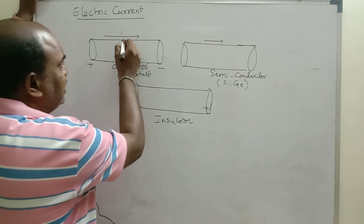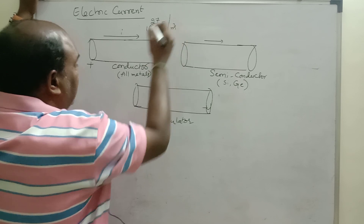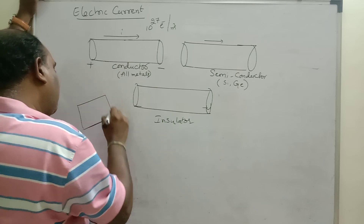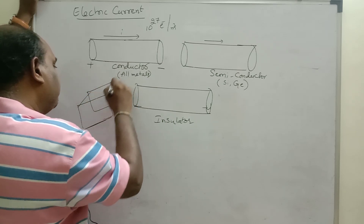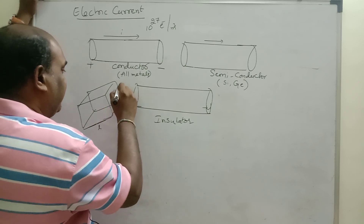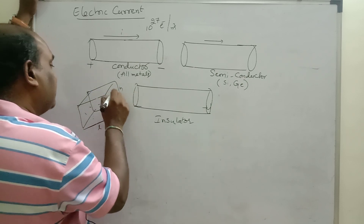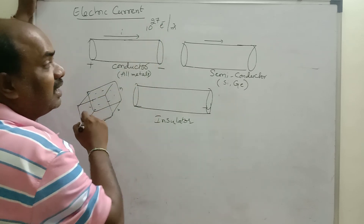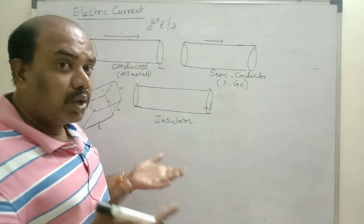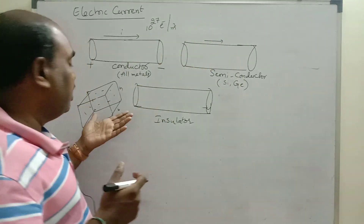Every conductor consists of 10 to the power 27 free electrons per cubic meter. That means if you take one meter length, one meter breadth, one meter height — one cubic meter of metal — 10 power 27 free electrons are present. 10 power 5 means 1 lakh, 10 power 6 means 10 lakhs, 10 power 7 means 1 crore — imagine how many free electrons are present at 10 power 27.